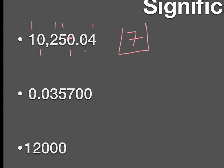Let's also do the next one below it. How many counting numbers? 1, 2, 3. I have two zeros before the first counting number — those are not significant. I have two zeros after the last counting number. I check: is there a decimal place visible? The decimal spot is all the way back, but yes, it is visible. So those trailing zeros are significant, giving 1, 2, 3, 4, 5 — five significant figures.